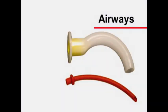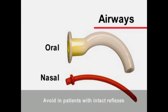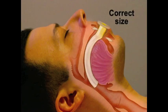Occasionally, it is difficult or impossible to provide ventilation unless an oral or nasal airway is inserted. These devices are most helpful when the cough and gag reflexes are absent. Insertion in patients with intact reflexes may precipitate coughing, vomiting, and laryngospasm. When used, the appropriate size device must be selected in order to avoid worsening of the airway obstruction.